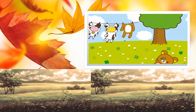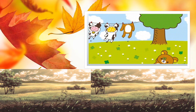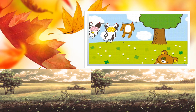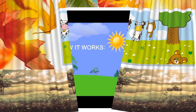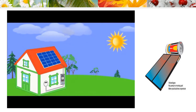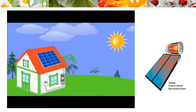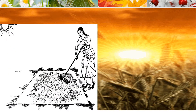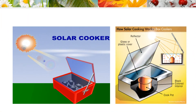We already know that we get heat and light from the sun. There are many uses of solar energy. The sun's heat dries our wet clothes. The solar geyser uses solar energy to heat water. We can also dry harvested grains in the sun. A solar cooker uses the sun's heat to cook food.